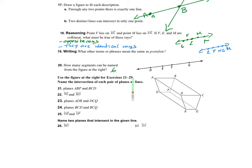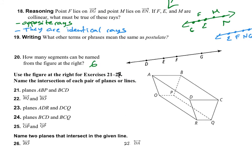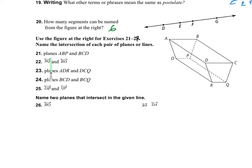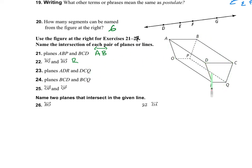For exercises 21 to 27, we use this figure. I want to name the intersection for each pair of planes or lines. Remember: two planes intersect in a line, and two lines intersect in a point. Plane ABP and plane ABCD intersect on line AB. Line RQ and line RO share point R, so their intersection is point R. Plane ADR and plane DCQ intersect on line DR.